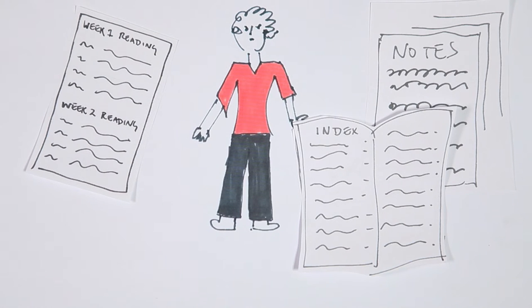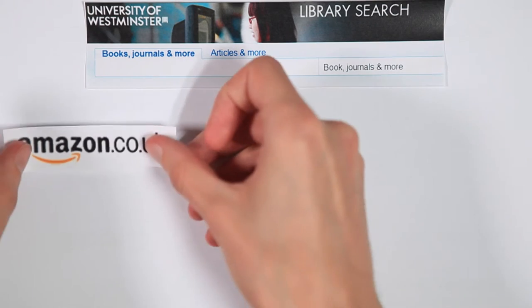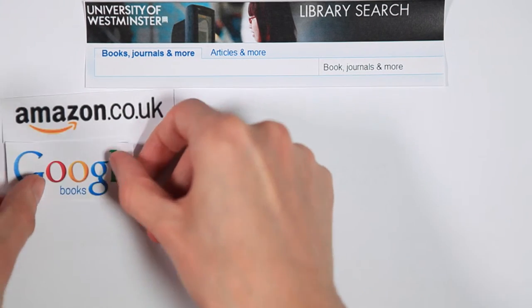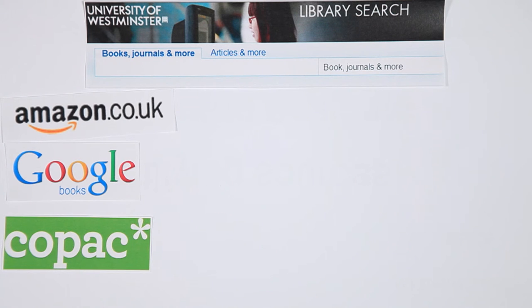Dave also needs to find other resources using keywords as search terms. For books he uses the library catalog, Amazon, Google Books and Copac which searches other library catalogs.